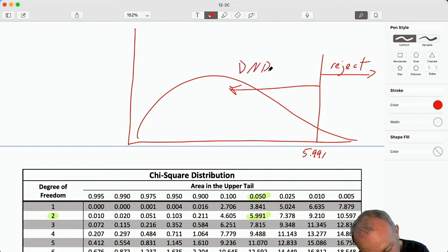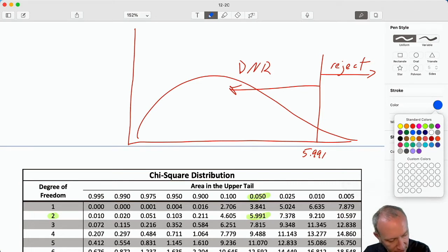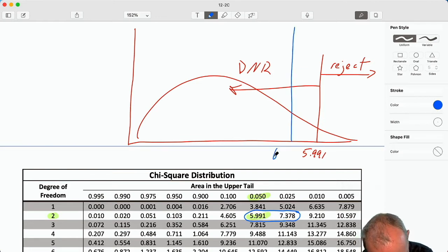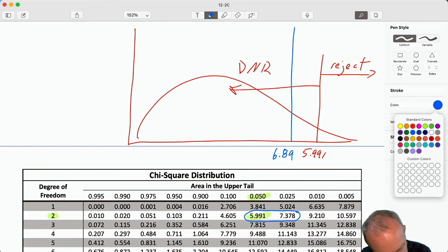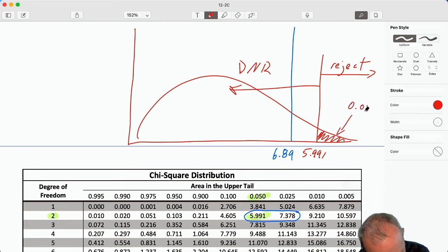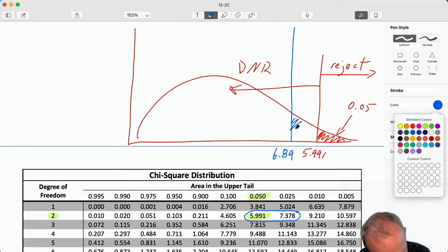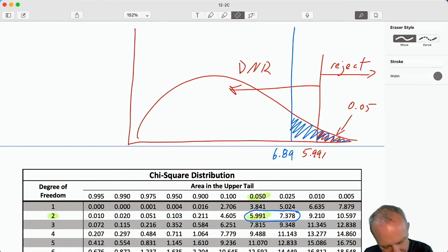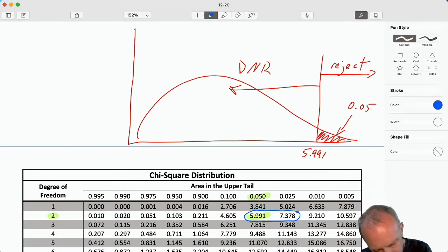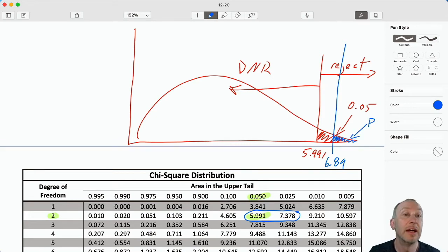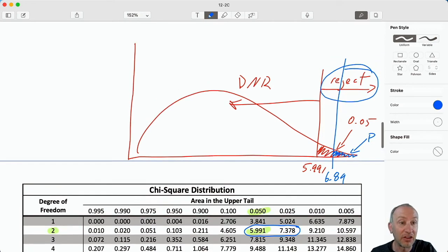Here's where we will reject. Here's where we will not reject. Our test statistic was 6.89. So it's between these two. And if this area here is equal to 0.05, then this area here... Oh, what have I done? What a silly mistake. Here is 6.89. And here, that blue area, that p-value, definitely less than 0.05. Our test statistic is in the rejection region, as defined by that critical value.